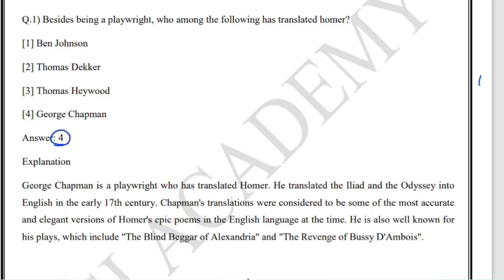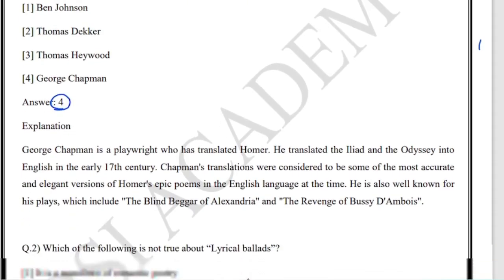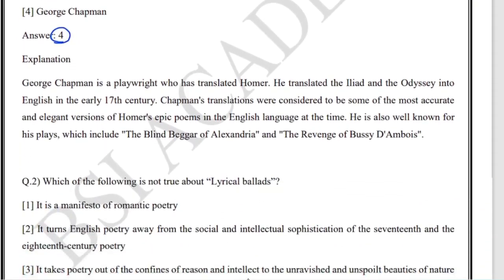George Chapman was a playwright who translated Homer. He translated the Iliad and the Odyssey into English in the early 17th century.